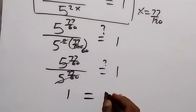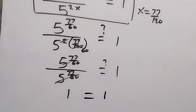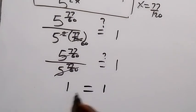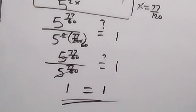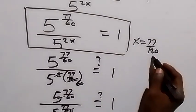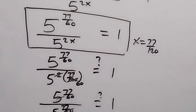Left hand side equals right hand side, so therefore x equals 77 over 120 in this problem. Thank you for watching, please share this video, give it a thumbs up, subscribe to my channel, and see you in the next class. Bye for now!